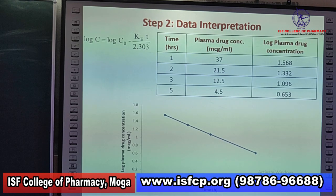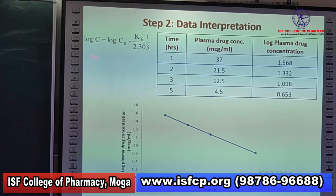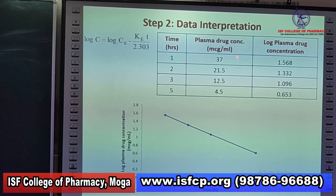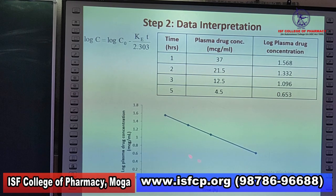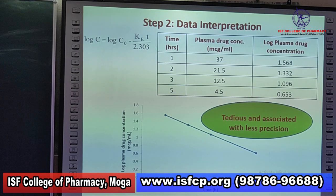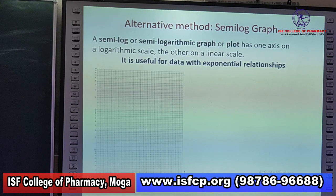The second step is data interpretation. Following the equation log C = log C₀ − ke·t/2.303, we need to plot log C versus time, with log C on the y-axis and time on the x-axis. Converting concentration data to logarithmic form and plotting gives a straight line, but this method is tedious and associated with less precision. Thus, the alternative method — the semi-log graph method — is much more accurate and precise.